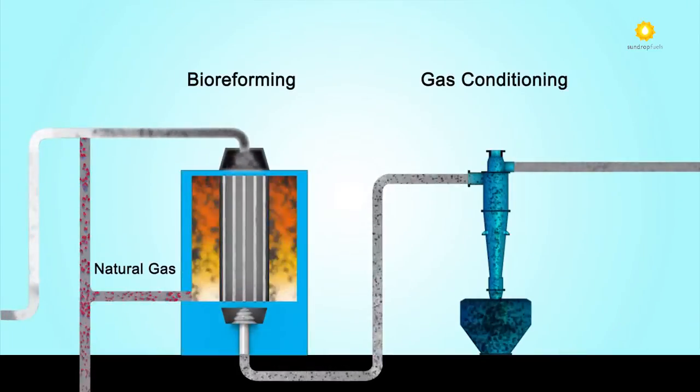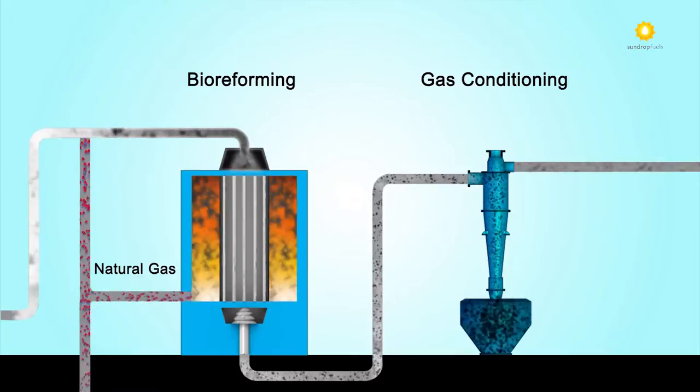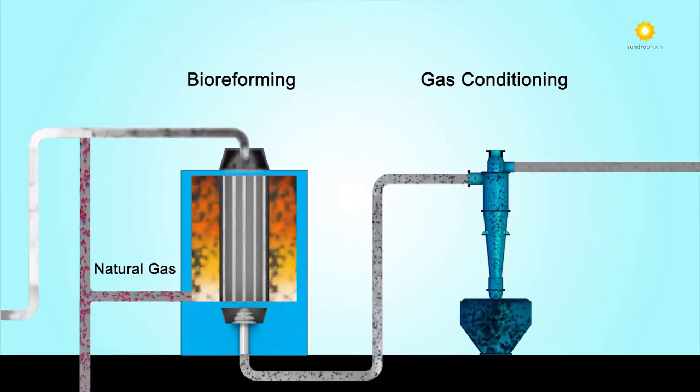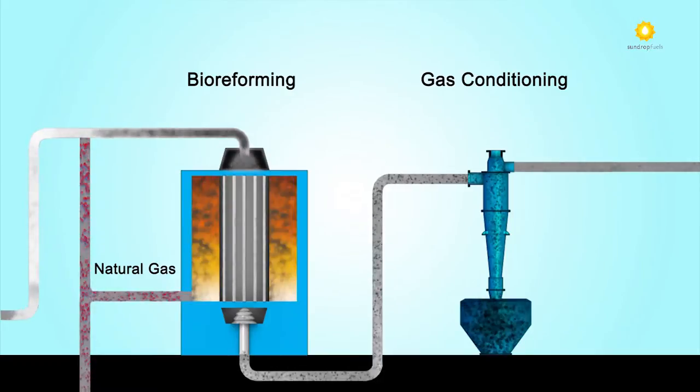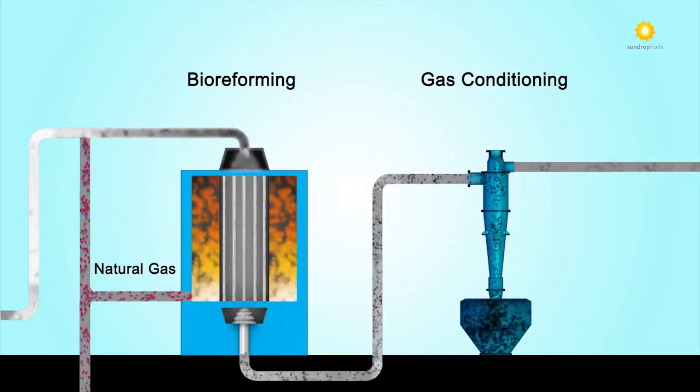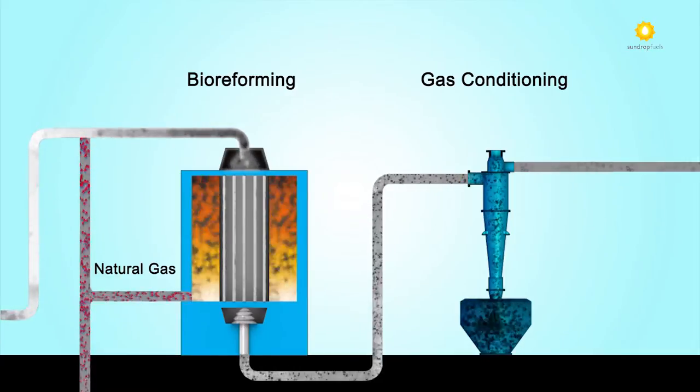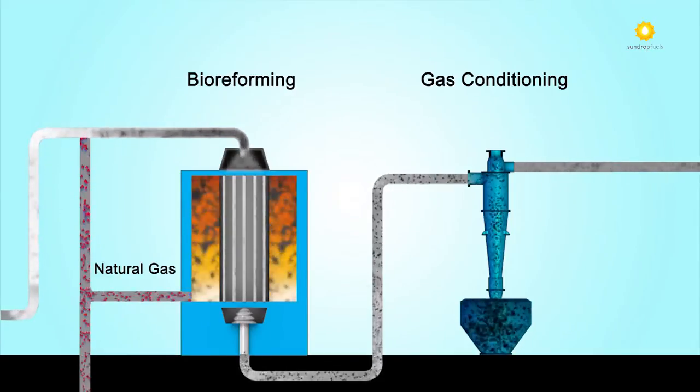Natural gas is now introduced into the process for two purposes. First, part of the natural gas stream is blended with the biomass to utilize its high hydrogen to carbon ratio to balance with that found in biomass to create an optimized ratio for transportation fuels of two to one.